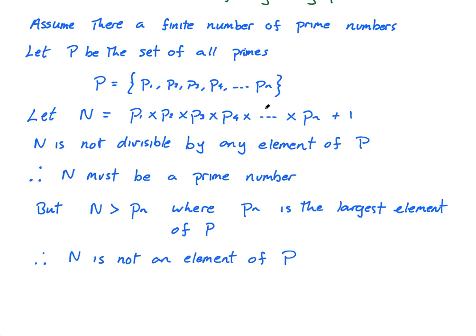So, can we see the contradiction? I've said here, I've shown here that N must be a prime number because of this thing, because it's not divisible by any of these. But, here I've said, N is not an element of P, but P is the set of all prime numbers, so how could it be a prime? How can N be a prime and not be in the set of all prime numbers?